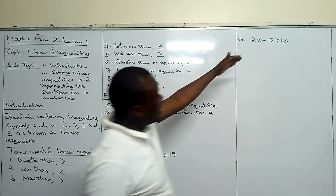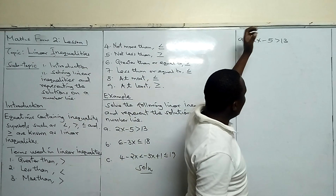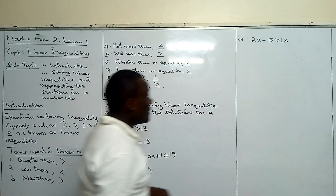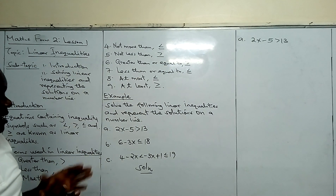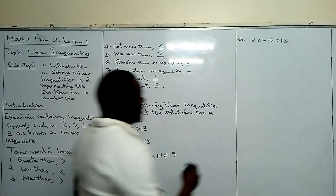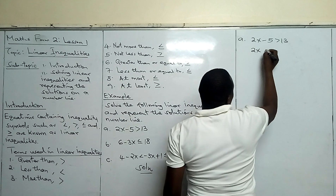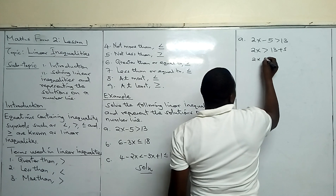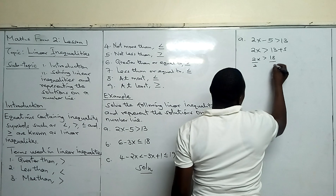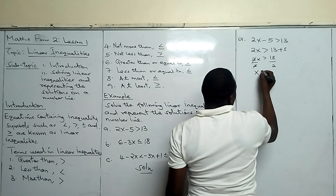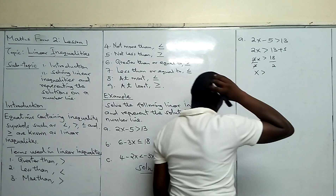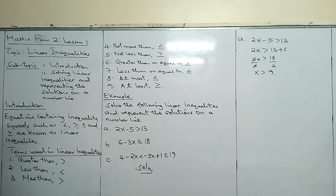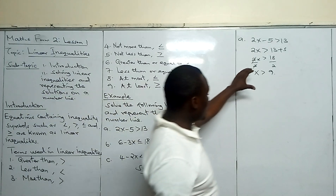This inequality symbol will act as an equal sign. You will see that when we are moving a number which is a minus to the other side of the symbol, its sign will change — the same way it changes in linear equations. So we will say 2x is greater than 13 plus 5. That gives us 2x greater than 18. We divide both sides by 2, giving us x greater than 9.